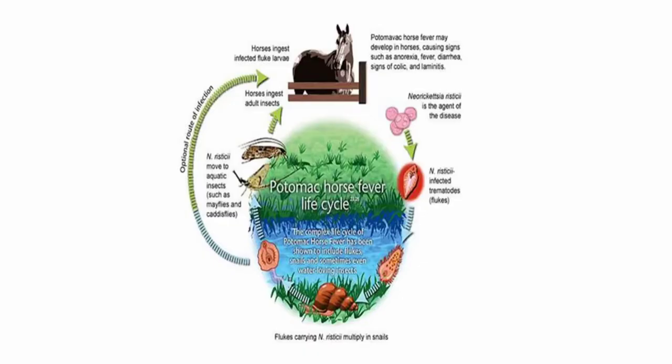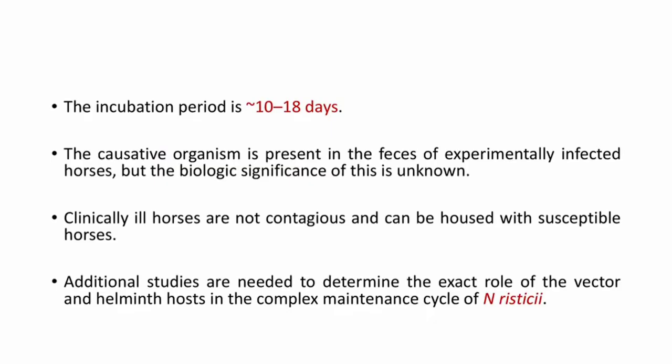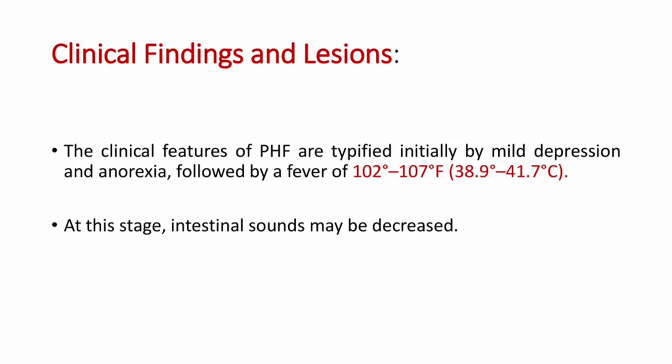In the life cycle of Potomac horse fever, Neorickettsia risticii infects trematodes or flukes; the flukes multiply in snails, and the organism moves to aquatic insects such as mayflies and caddisflies. Horses ingest the adult insects or infected fluke larvae, and Potomac horse fever develops. The incubation period is approximately 10 to 18 days. Clinically ill horses are not contagious and can be housed with susceptible horses.